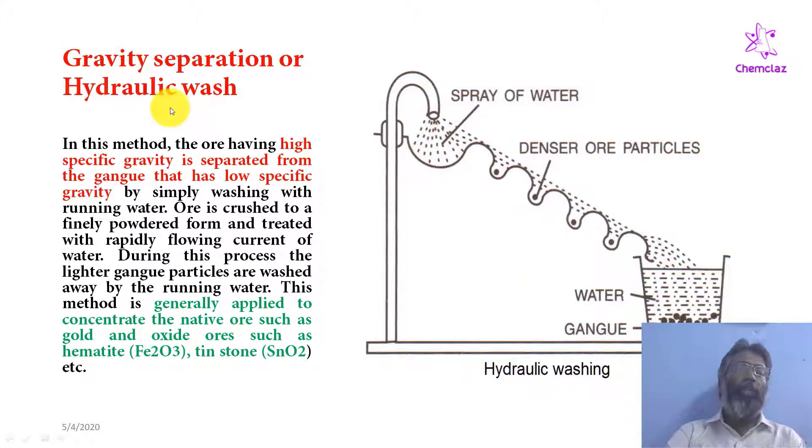Hydraulic washing or gravity separation is based on the principle of specific gravity. The specific gravity of ore and gang particles. Ore particles have high specific gravity and gang particles have low specific gravity.